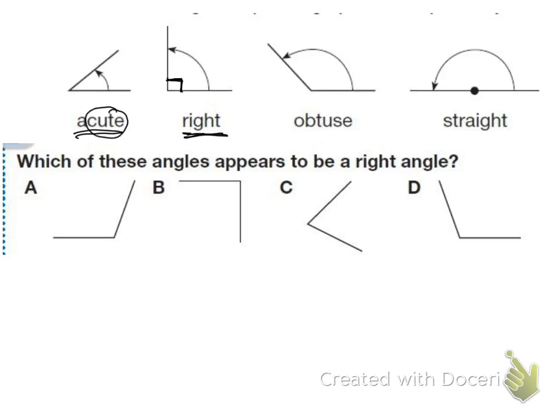Right angles form a square corner. The next one is obtuse angles. An obtuse angle is an opening that is more than a right angle, or bigger than a right angle. And then a straight angle is when we have a straight line.